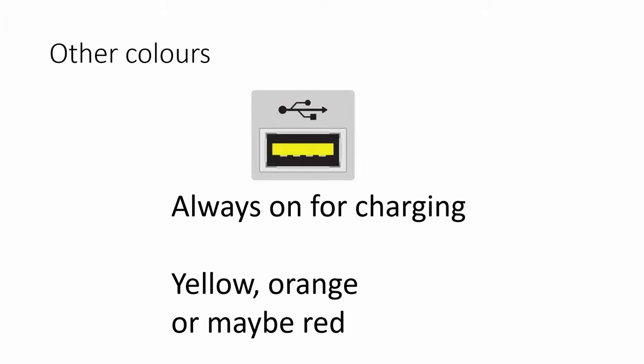Looking at other colors you might find: you may see a yellow port that looks like a USB port. If it's yellow, that means it's always on, so you can charge your phone or any other device through it even if the computer is turned off — it still has power going through it. Typically yellow, but it could be orange, and sometimes even red may also indicate that it's always on.